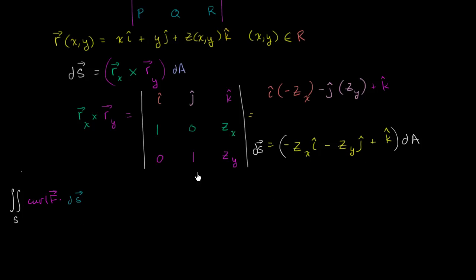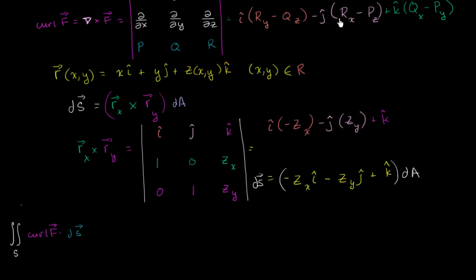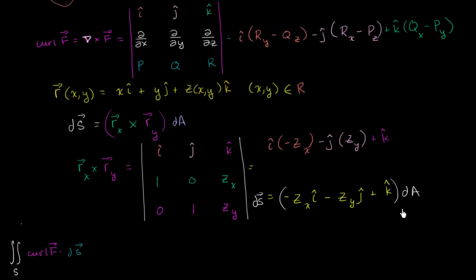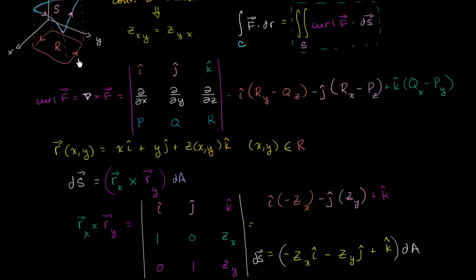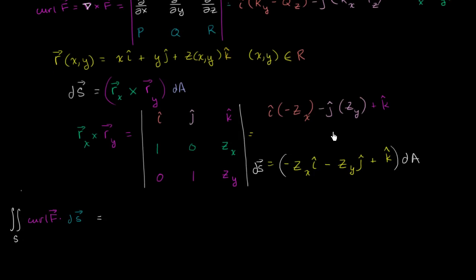This expression is just going to be the dot product of the curl of F — which is the expression from above — dotted with the cross product result. We take the dot product of those two vectors and then multiply by dA, which we can treat as a scalar value. So this is going to equal a double integral over the domain of our parameters — the region R. This is how we've manipulated surface integrals so far: turning them into double integrals over the domain of the parameters.